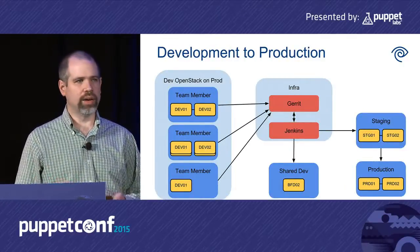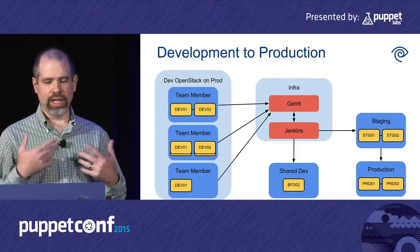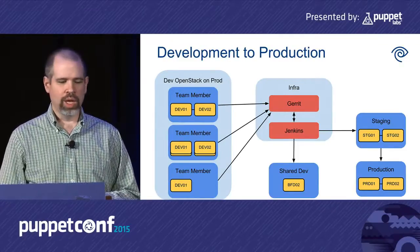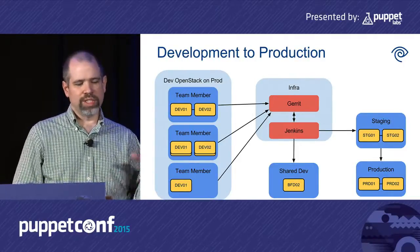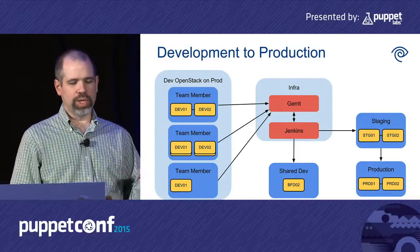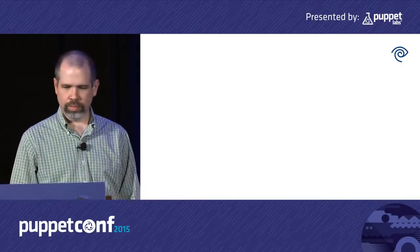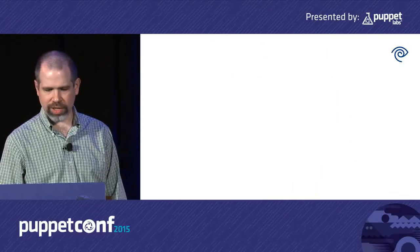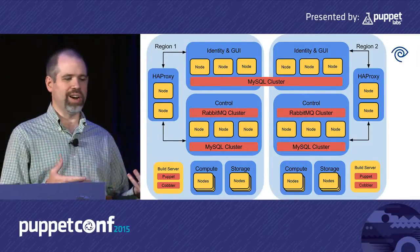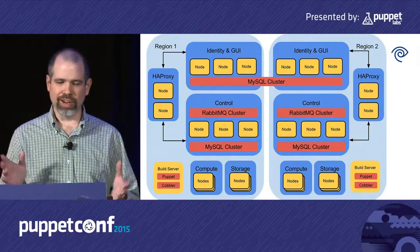This is a high-level diagram of how changes start in our dev environment and move through our CI process, ending up deployed into our staging and production environments. Each of the yellow boxes represents an OpenStack region, which usually corresponds to a data center or part of a data center. We have multiple regions in our staging and production environments and in some dev environments.